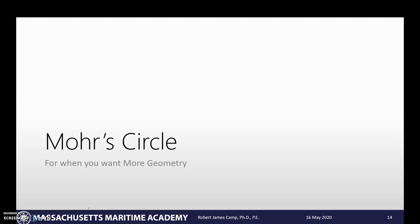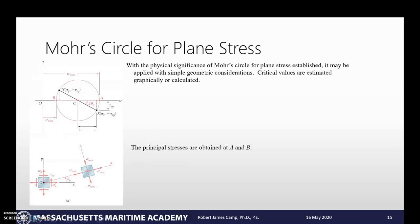So let's take a look at a Mohr's circle. The physical significance of Mohr's circle for plane stress, once we've established it, we can really simplify it down to geometric considerations. And then we can calculate them or just show them off graphically. So as long as we know what our stresses are, the normal in the X, normal in the Y, normal in the Z, we can plot the circle.